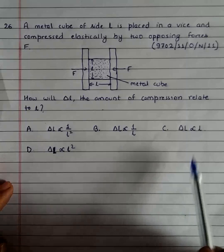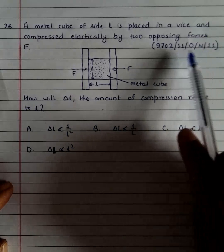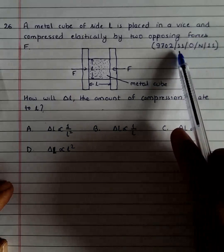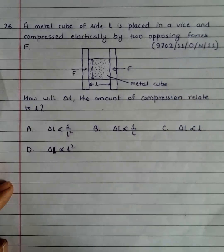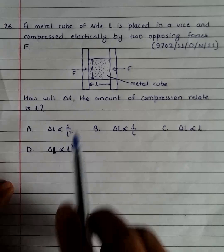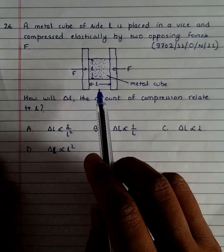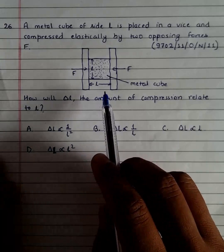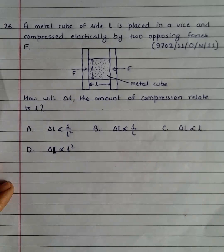This is question 26 from the 2011 October-November paper, question paper 11. It says that a metal cube of side L—cube means all sides have the same length, side L—is placed in a vice and compressed elastically by two opposing forces, as shown.